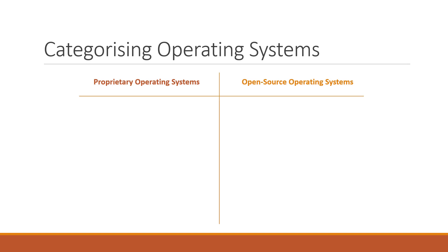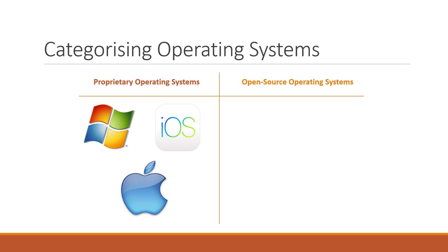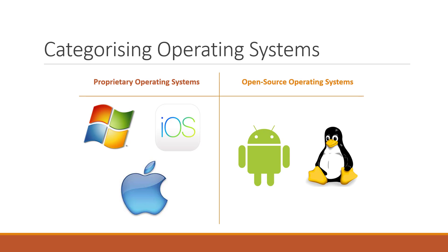You need to be able to categorize the different operating systems as either proprietary or open source software. In the proprietary category, we have Windows, developed and owned by Microsoft. Then we have iOS and macOS, which are developed and owned by Apple. Computer users cannot edit or modify the code on these operating systems. In the open source category, we have the Android operating system and the Linux operating system. We can access the source code for both of these products and change the way they work, because the companies that develop these operating systems release their code to the public.